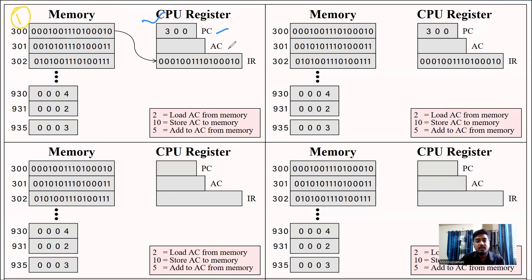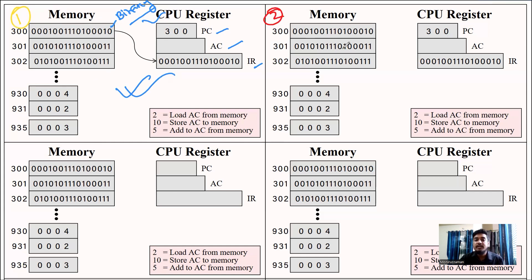The CPU registers are the program counter, accumulator, and instruction register. This is the first step: the program counter is 300. In memory, the instruction is loaded. The instruction is then loaded into the IR. This is the first step in the program counter.